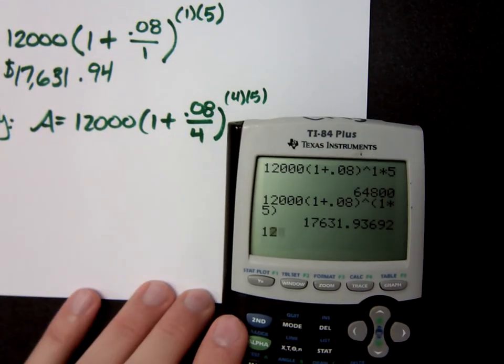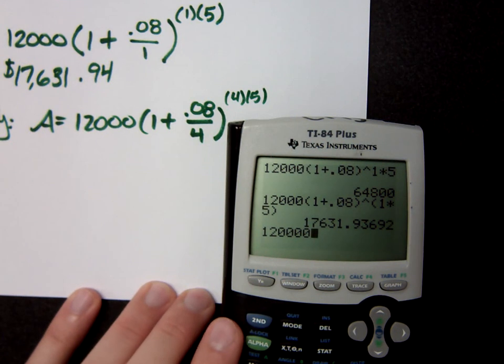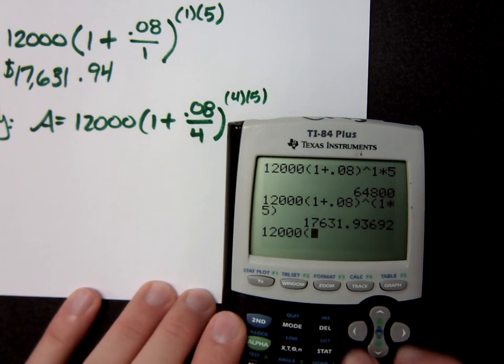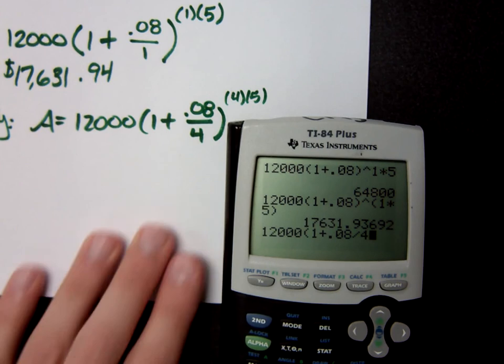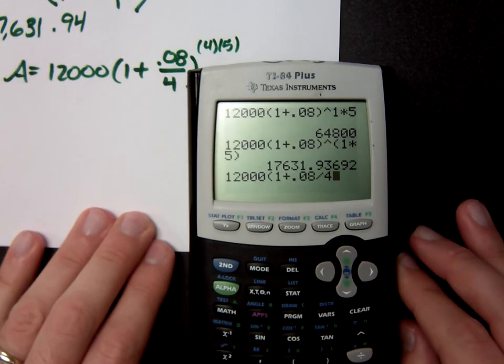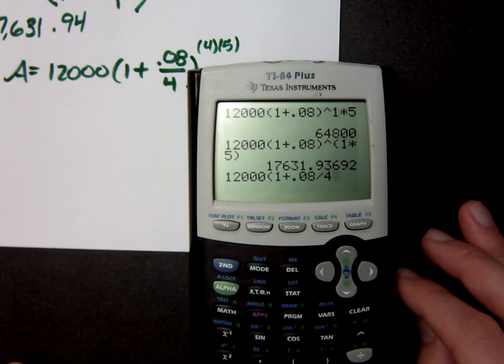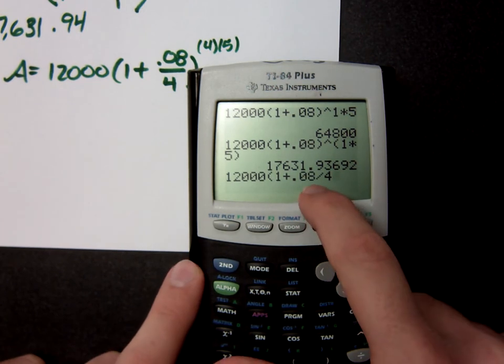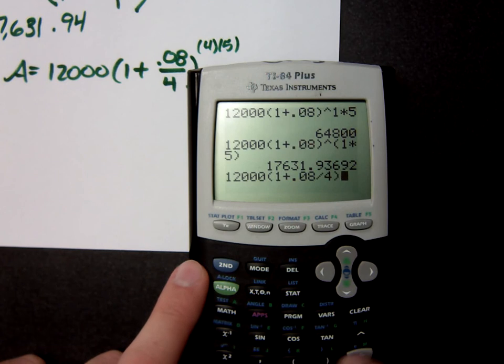Let's see what the calculator gives me for this. When you enter that in, in the first parentheses, and you're doing the .08 divided by 4, do you need to bracket those within the bracket? No. Because the order of operations will be to do the division by 4 first, and then the addition. Raised to the 4 times 5 power.